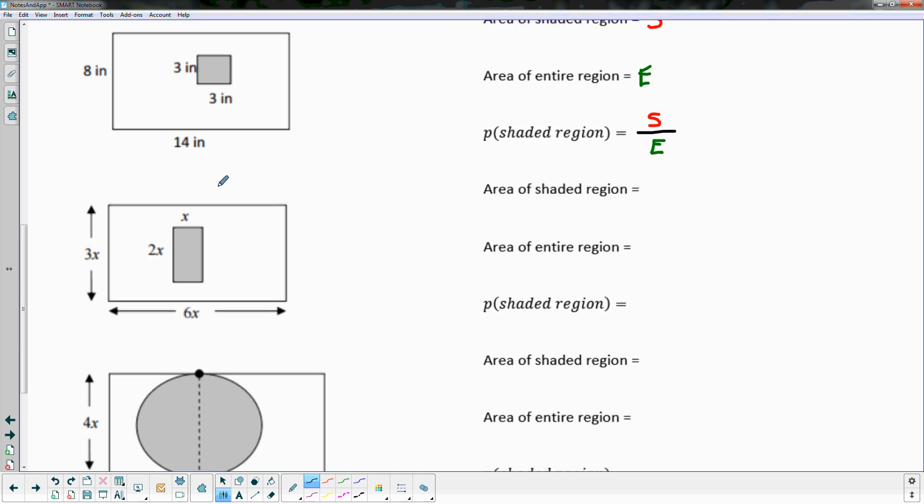So for this one, the area of the shaded region is this X by 2X rectangle. An X by 2X rectangle to find the area of it just means I multiply those together. Well, what do I get when I multiply X by 2X? Well, I have an X to the first and an X to the first here, so I add those exponents and I get 2X squared. For the area of the entire region, I have a 3X by 6X rectangle. And 3X times 6X, 3 times 6 is 18, X times X is X squared.